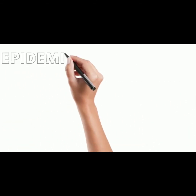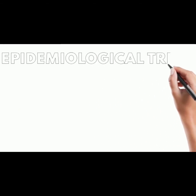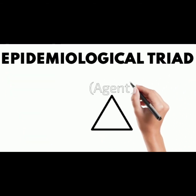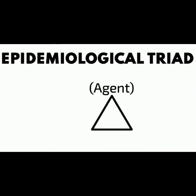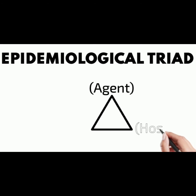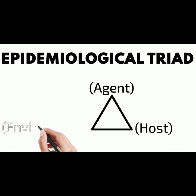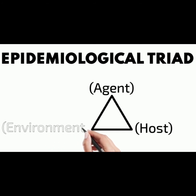Next comes to the epidemiological triad. For the occurrence of a disease in man, three things are required: agent, environment and host. These three factors are referred to as the epidemiological triad.